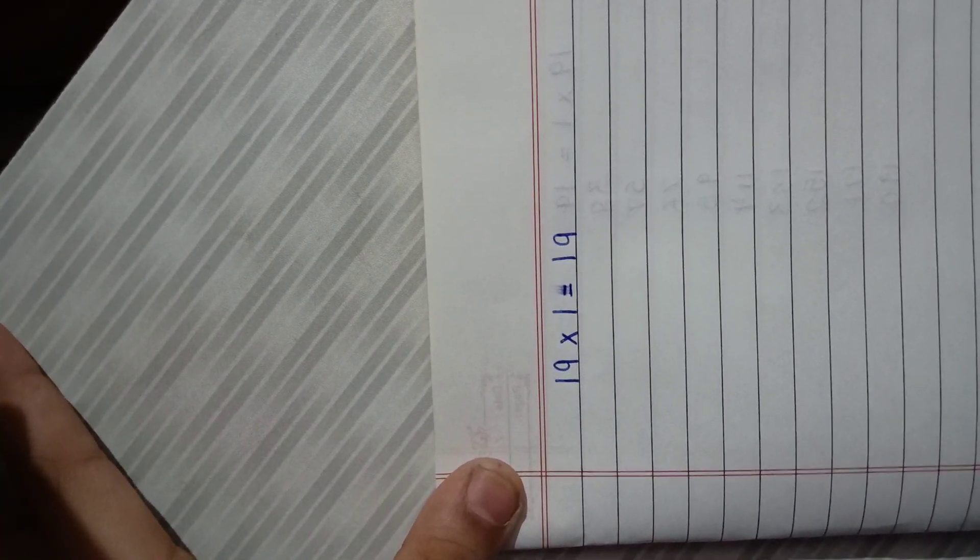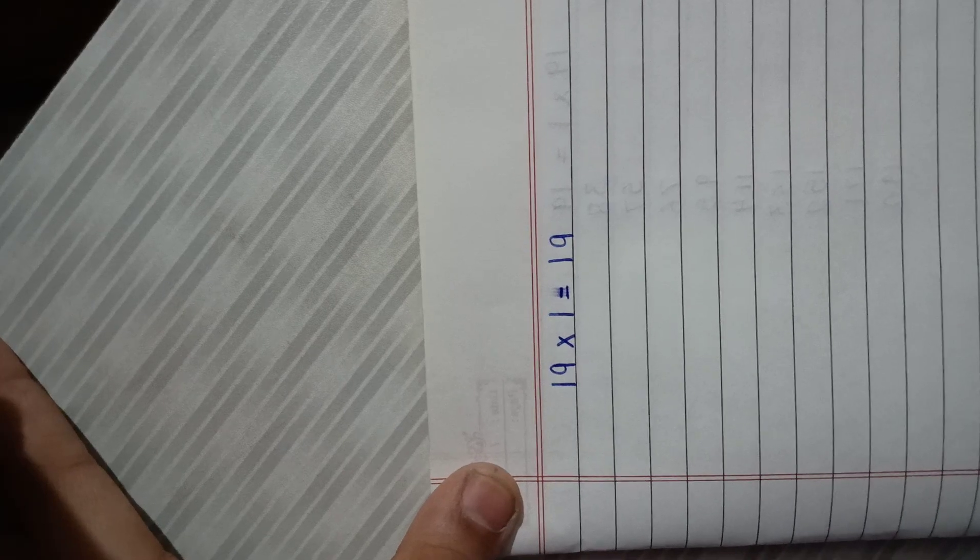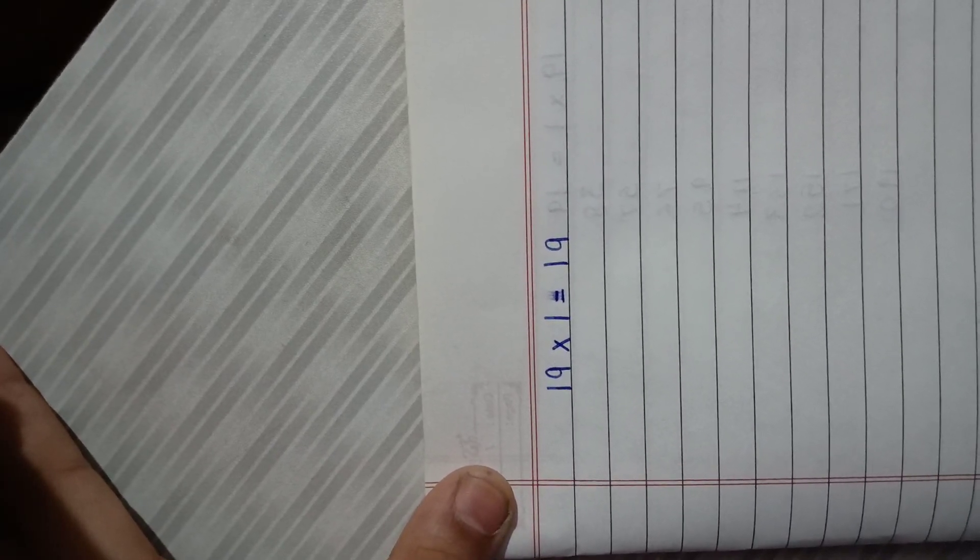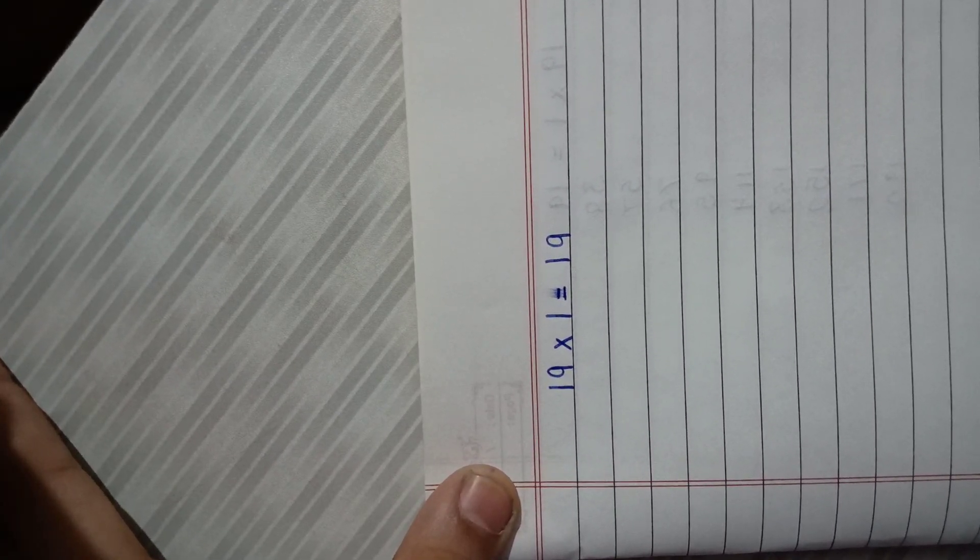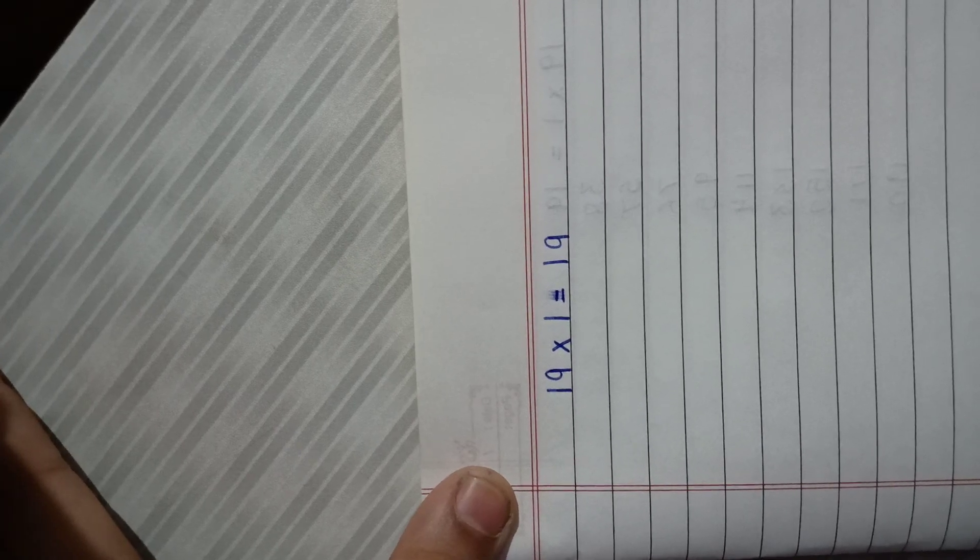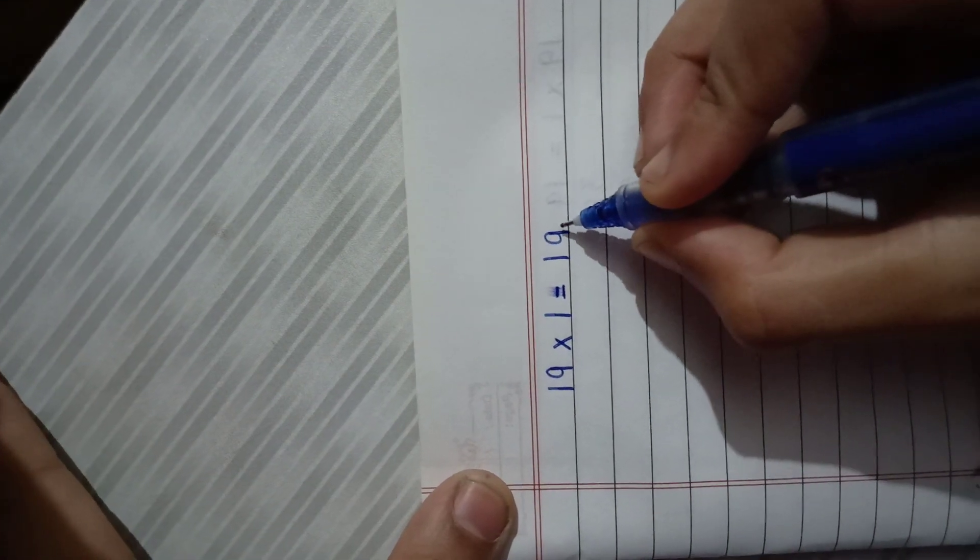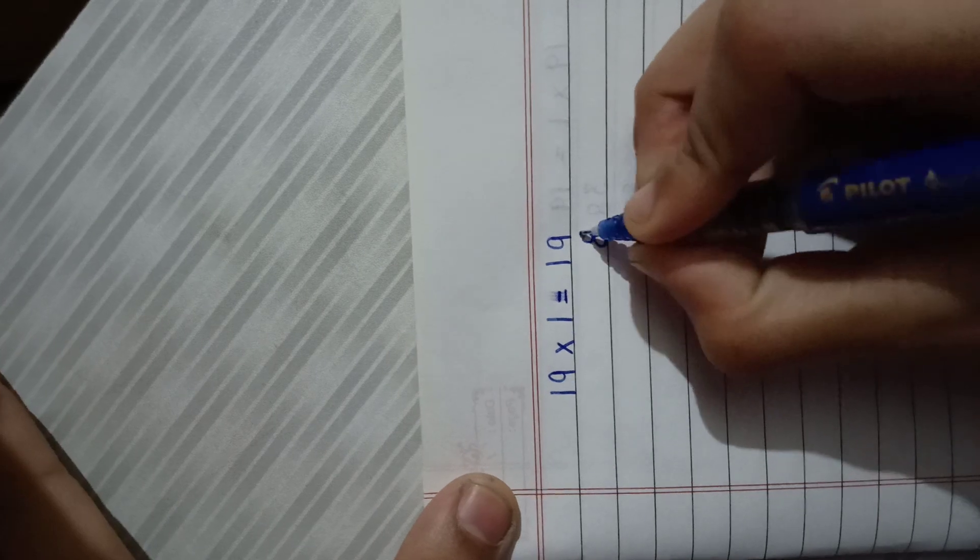Hello friends, welcome to my channel Rudraksha class isharma. Today's topic is an easy way to learn the table of 19. First we have to write backward counting from 9 to 0.